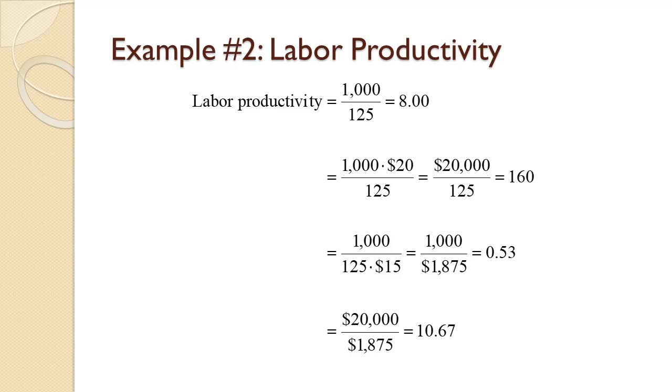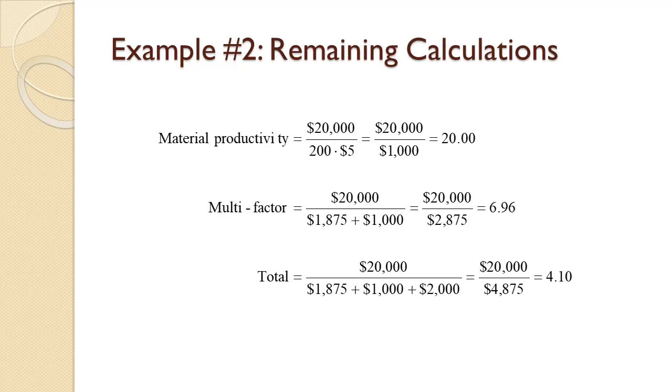For the rest of the calculations, we will use dollars for everything. We already know that the 1,000 units of output are valued at $20,000. To convert the material to dollars, we multiply the 200 pounds times $5 for $1,000. Dividing $20,000 by $1,000 gives us material productivity of 20, so each dollar of material yields $20 of output.